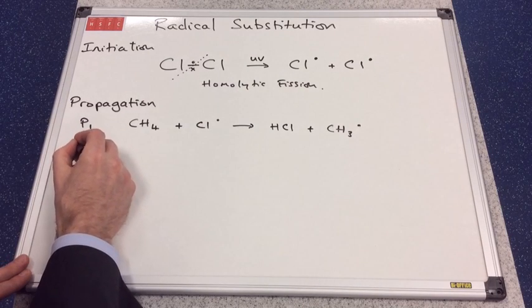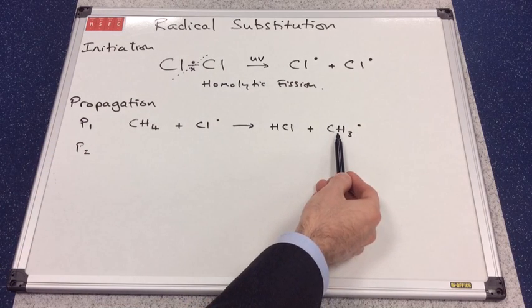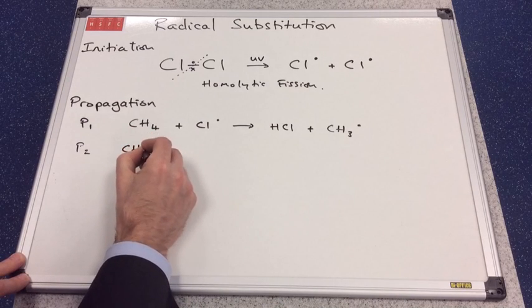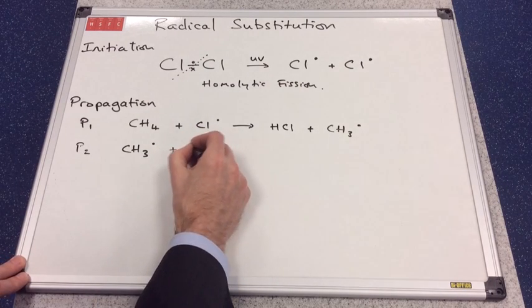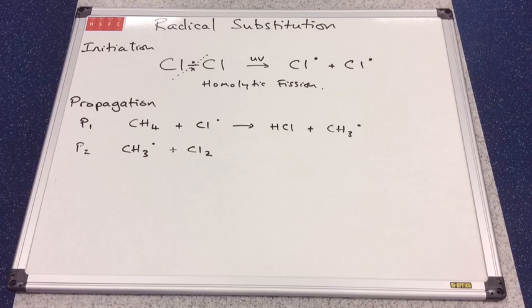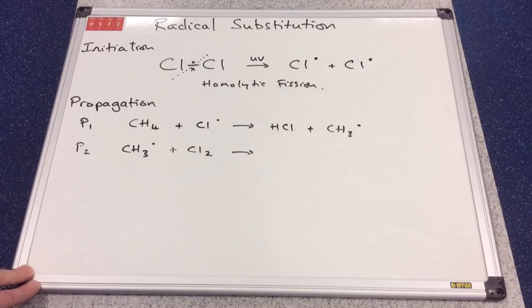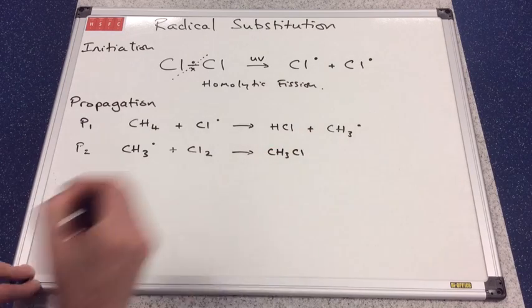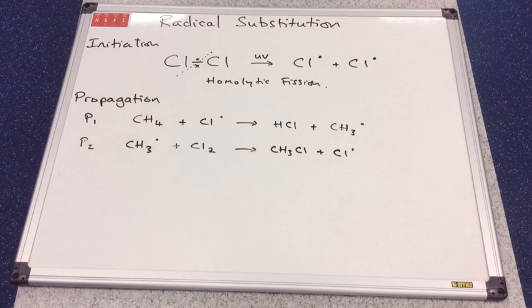As mentioned, propagation steps always happen in pairs. In propagation step 2 (P2), the methyl radical just generated — which is very reactive due to its unpaired electron — reacts with a stable chlorine molecule that hasn't been broken up yet. It gets one electron from one of the chlorines in the molecule, forming CH₃Cl as the stable product and producing another chlorine radical.